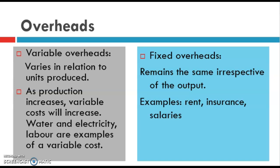A simple example: if I make one hot dog, it's going to cost me one bread roll and one Vienna sausage, plus a little bit of water and electricity. But if I make a hundred hot dogs, I'm going to have to pay for a hundred bread rolls and a hundred Vienna sausages. So it varies — it changes depending on how many units are produced.